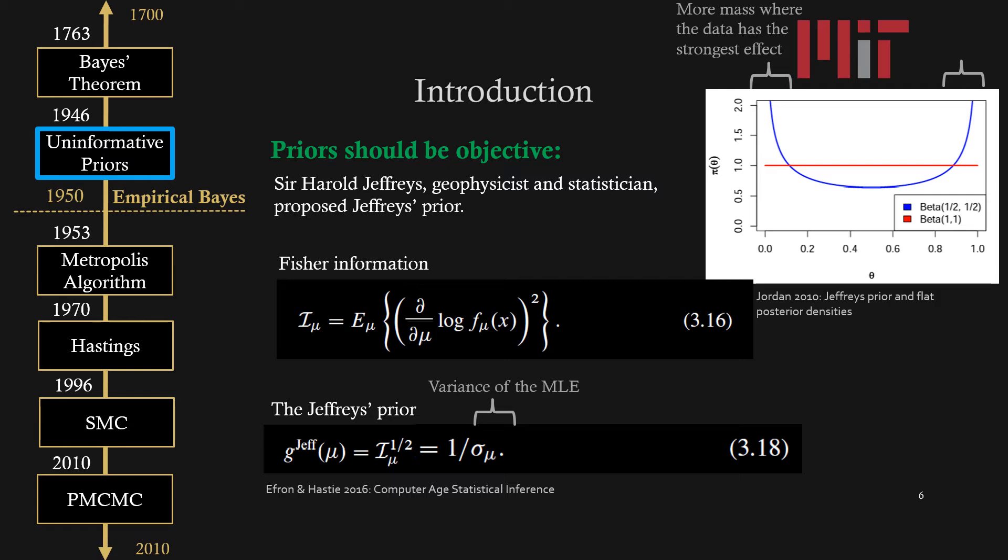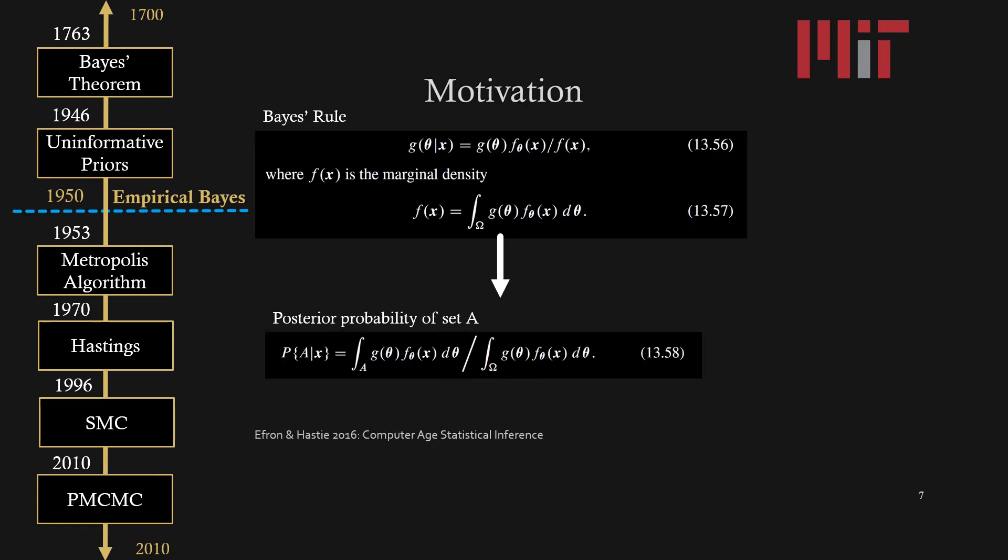The Jeffreys prior is able to remain invariant under a change in coordinates for mu, and this is shown by the image on the right where there is more mass for Jeffreys prior where data has the strongest effect. This could be considered more unbiased when compared to just using a uniform prior. Unfortunately, these objective or uninformative priors were rejected by most Bayesianists until the 1990s when they realized that these priors actually might be advantageous computationally because they can be used in MCMC or other computational methods where priors need to be easy to compute.